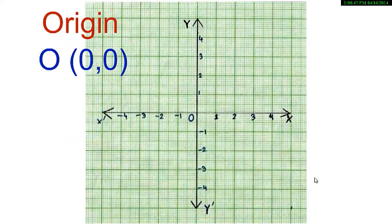The origin in the Cartesian coordinate system is the point where the two axes cross. Let me mark the origin for you. It is the point identified as O and given by the ordered pair (0, 0).